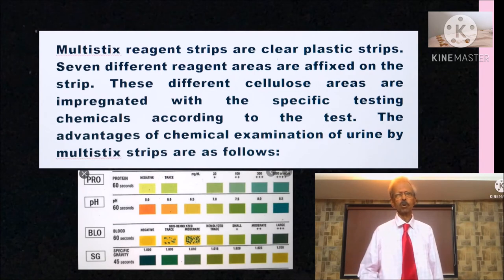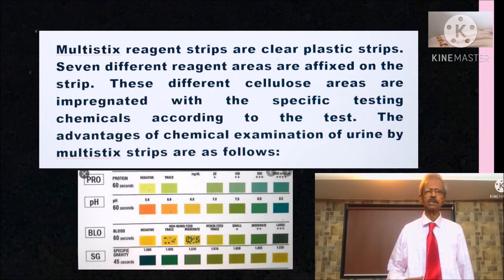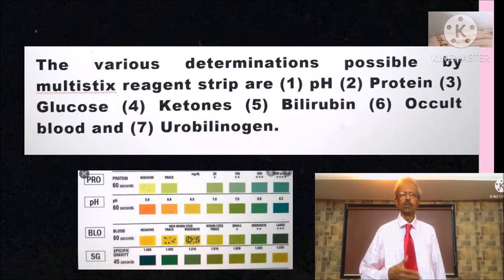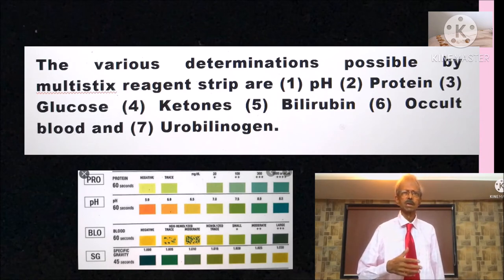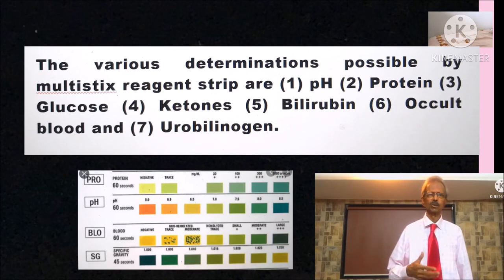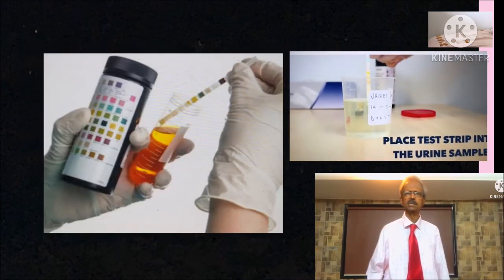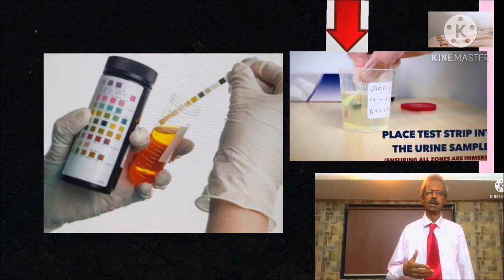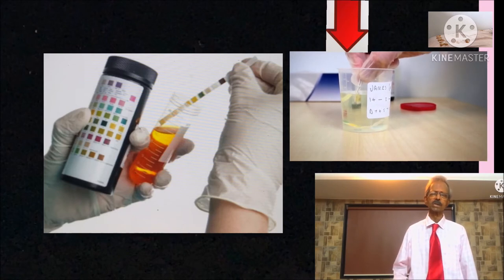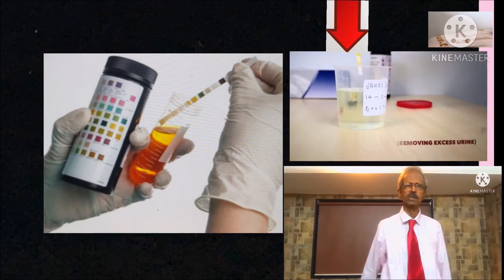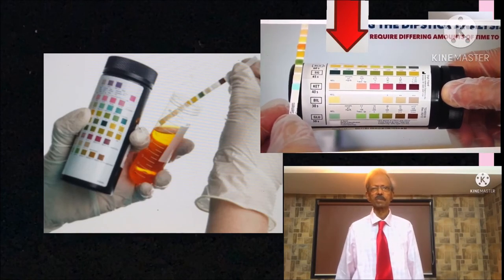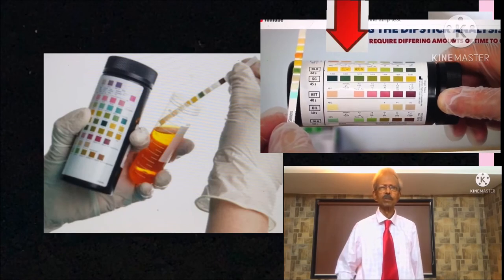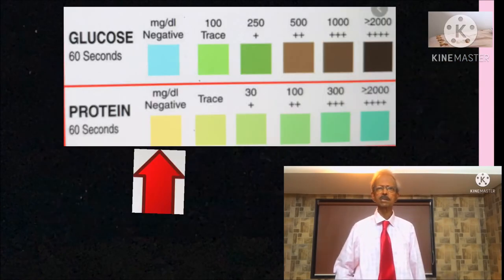The various determinations possible by multistix reagent strip are: pH, protein, glucose, ketones, bilirubin, occult blood and urobilinogen. And procedure for the test is like this. Take a urine strip and dip it in urine for few seconds. Take it out and compare the color with the color chart on the strip bottle. Change in color for a specific test means test is positive and no change in color means test is negative.